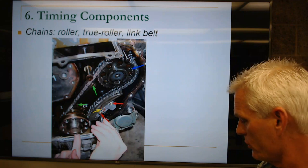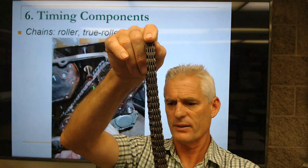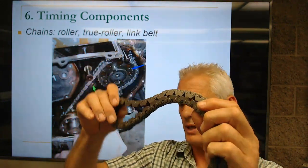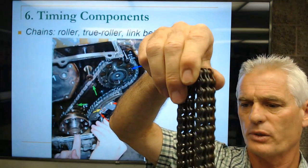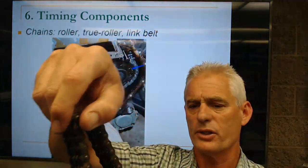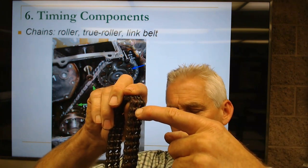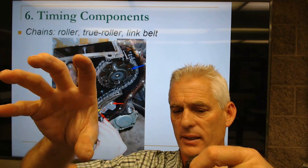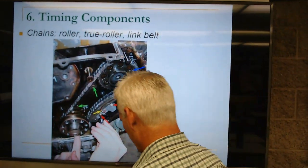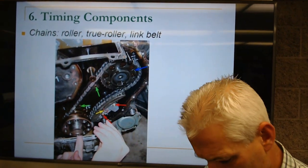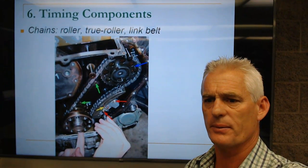We can have different chain types: a link belt, a double roller chain (considered stronger), or a true roller chain where the inside of the chain actually rolls when it hits the gear, providing less friction and less wear, lasting a little longer. For performance, we prefer true roller chains.